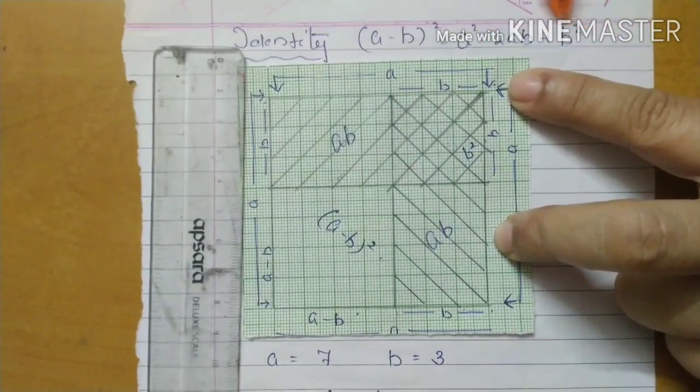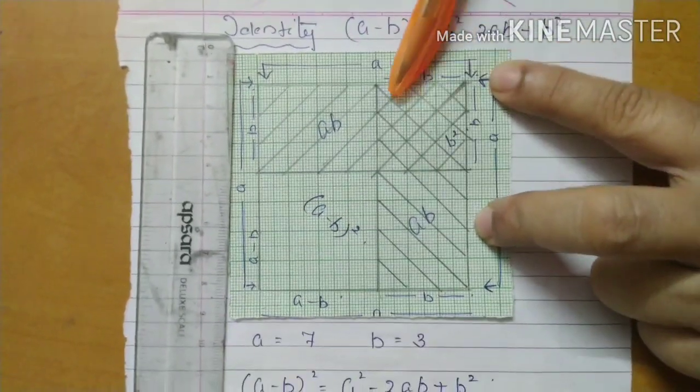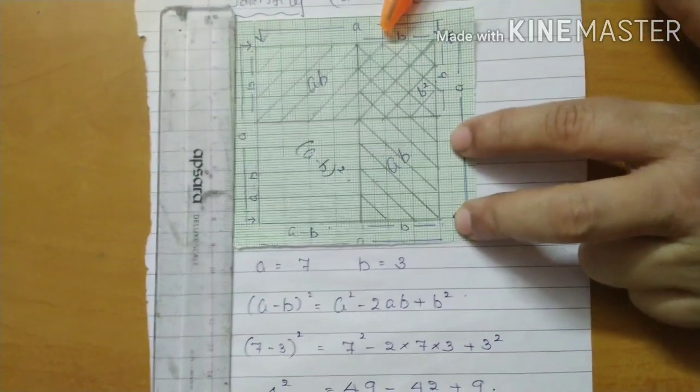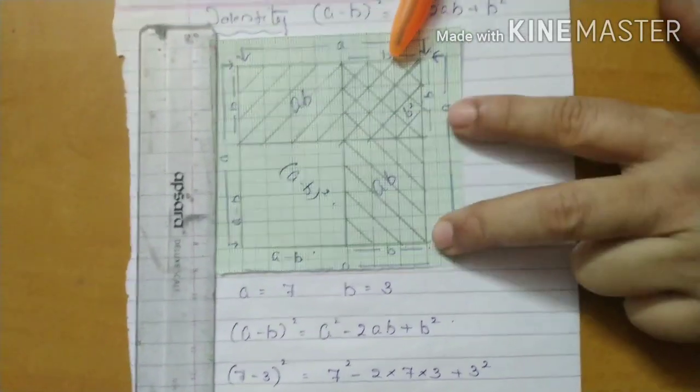How can we do this? First, we are drawing a square on the graph paper.